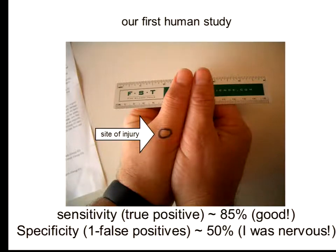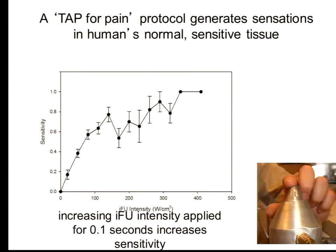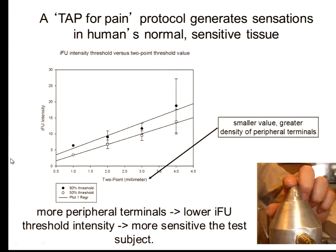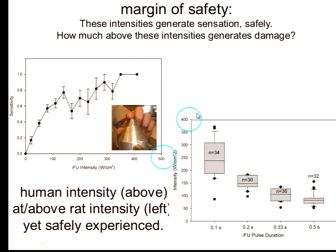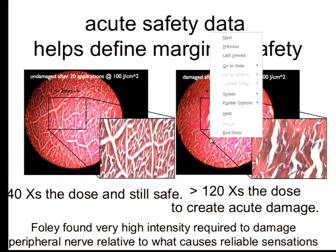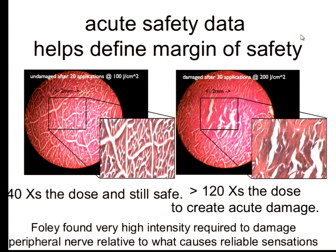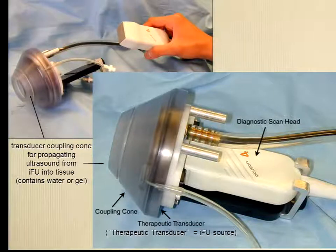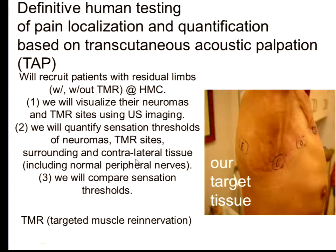This is our first human study — it was on Pierre, where sensitivity was good but specificity was not quite good, but he was nervous. We did a volunteer study on fingertips with a very consistent response that depends on intensity — it was not painful, but a very discerned sensation. The higher the amplitude, the more stimulation volunteers felt. Regarding safety, we did histological studies — the dose required for tissue damage was 120 times higher than what we applied. This is a prototype using a normal ultrasound probe with a cone filled with water. The first human study is now submitted for funding, involving patients with transcutaneous acoustic palpation of re-innervation — the idea being that if the muscle is re-innervated, there will be less neuropathic pain. TMR is targeted muscle re-innervation.